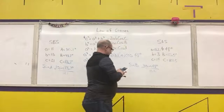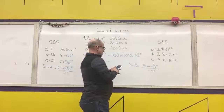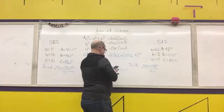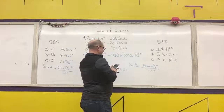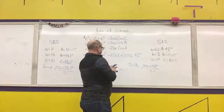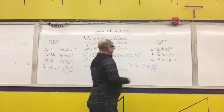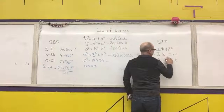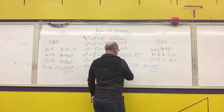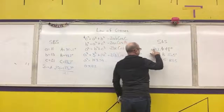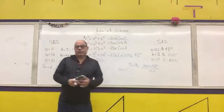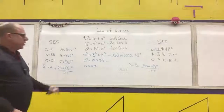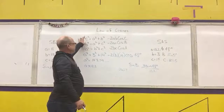Let's verify: sine of 121.5° divided by 14 should equal sine of 10.5° divided by 3. There are some rounding errors — anything in blue is approximate — but I get approximately the same decimal value for all of my law of sines relationships. That's how you use the law of cosines.